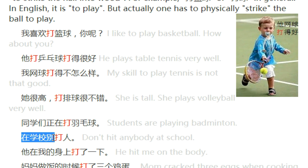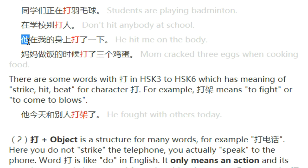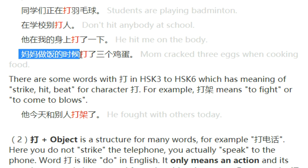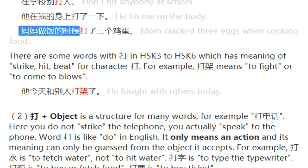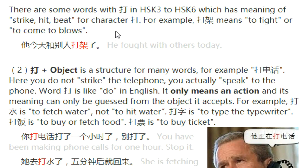The next example is not about sports but about behavior. 在学校别打人 — Do not hit people at school. Do not fight with people. 她在我身上打了一下 — He hit me on part of my body. 妈妈做饭的时候打了三个鸡蛋 — Mom cracked three eggs when cooking. Now we have more words using 打 with the basic meaning of hit, strike, beat, from HSK 3 to 6.